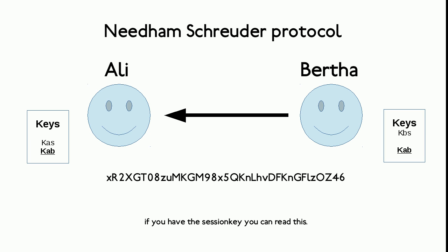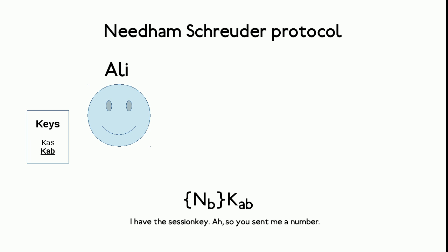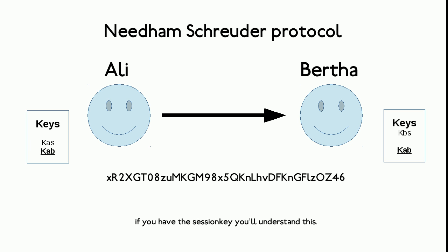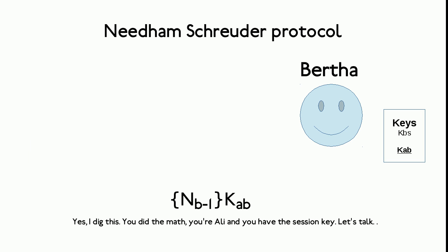Bertha has used the session key to encrypt the message she now sends to Ali. Ali uses his copy of the session key to decrypt the message and finds a number. He subtracts 1 and encrypts the result again with his copy of the session key, then sends it back to Bertha. Bertha is able to decrypt the message using the now confirmed shared session key.